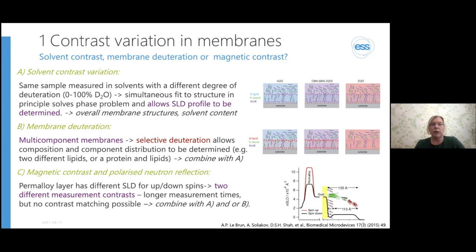If you have more than one component in your membranes and you want to distinguish between those, that's when the membrane deuteration really comes into play. In multi-component membranes, by selectively deuterating some components or one component in turn, you can work out the composition of the membrane and also the distribution of the components—whether they're inside or above. But you still need to combine this with solvent contrast variation to determine where the solvent is.